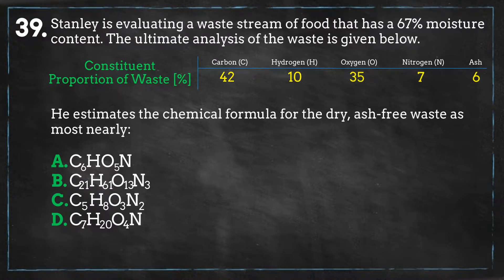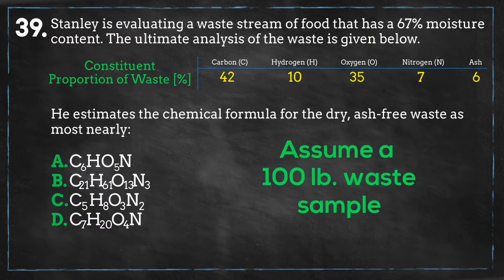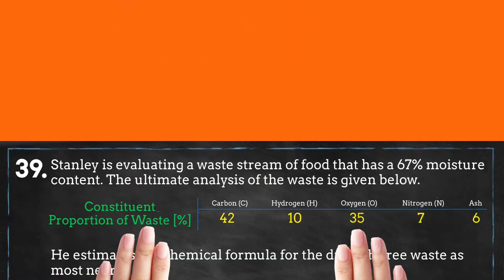Our goal is to find the correct proportions of atoms for carbon, hydrogen, oxygen, and nitrogen that best reflects this waste stream. We have the percentages of the five waste constituents and their molar masses, so we can use units of moles to compare the proportions of each. To get the number of moles, we divide the amount of each constituent by its molar mass. We don't have an exact amount, but we have percentages, so we can use a standard amount of 100 pounds to complete calculations.